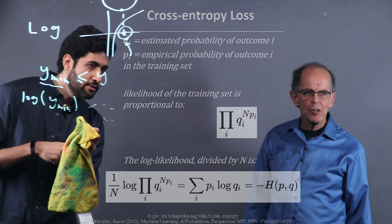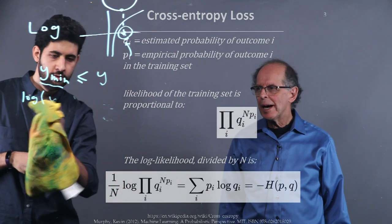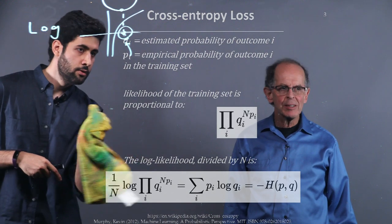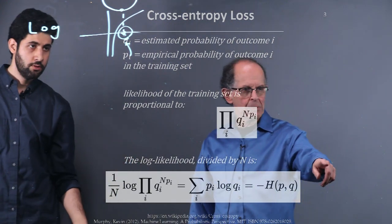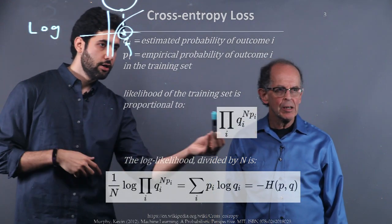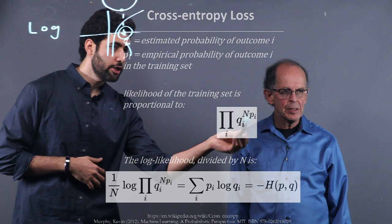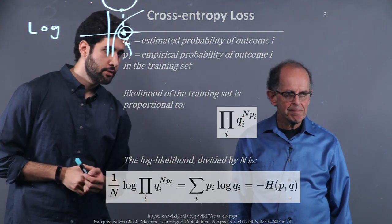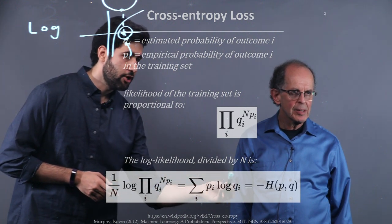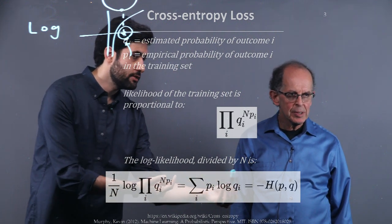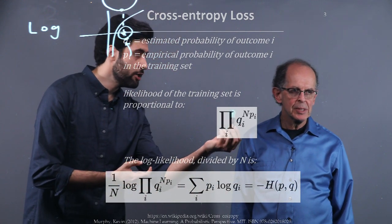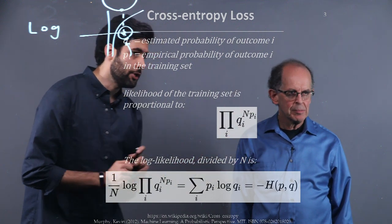If we take the log of this likelihood, it results in this expression, which can be simplified like this. And we are familiar with this expression - this is cross-entropy. So basically, maximizing the likelihood is equivalent to minimizing the cross-entropy.